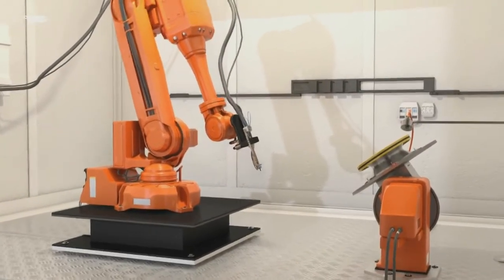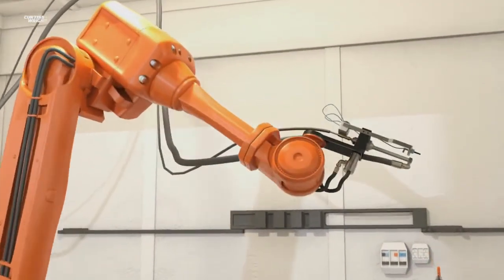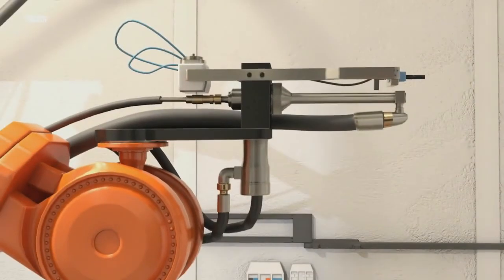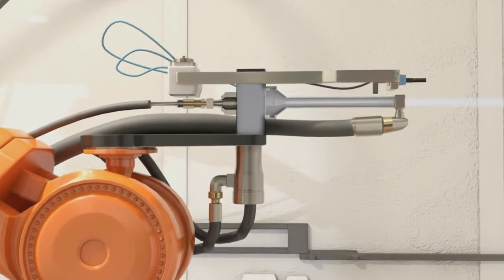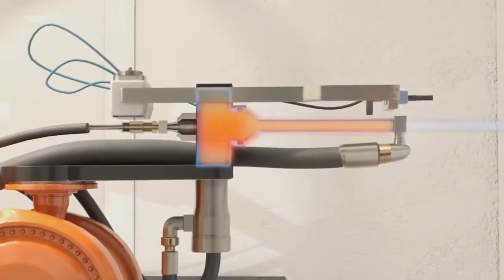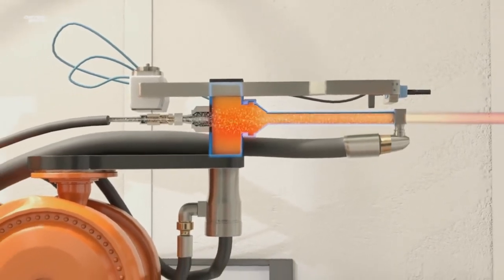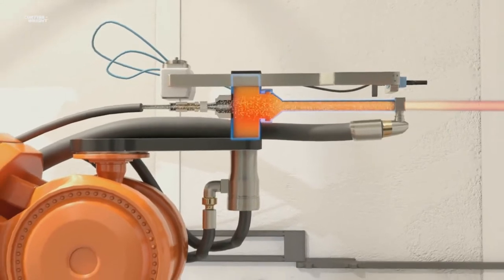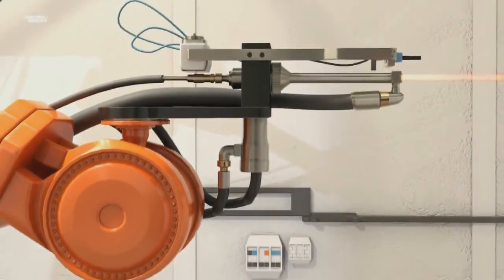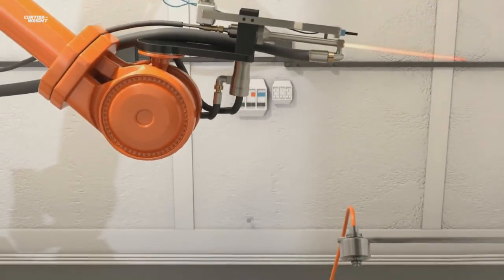The thermally sprayed coating is applied robotically in order to achieve controlled and consistent coatings on parts with complex geometries. The process begins with feedstock in either powder or wire form, which is heated to a molten or semi-molten state and propelled onto the component surface using the kinetic energy from a hot gas stream.